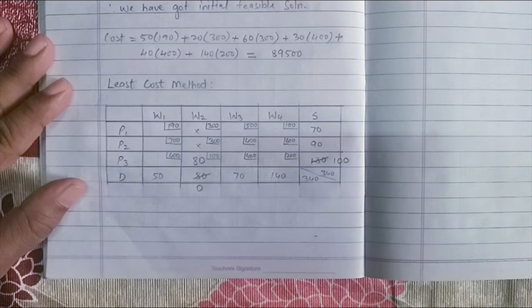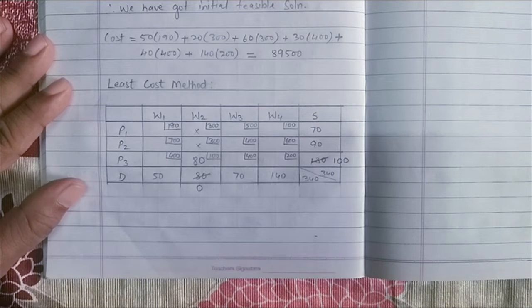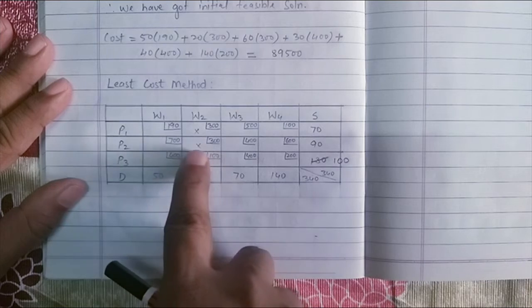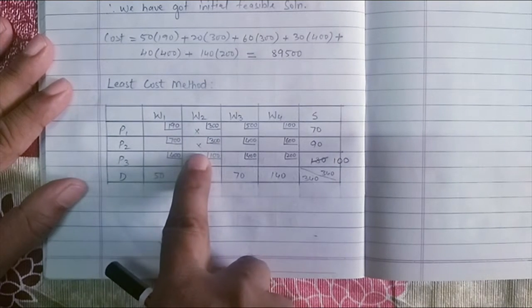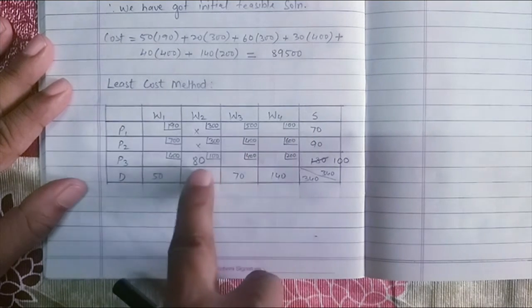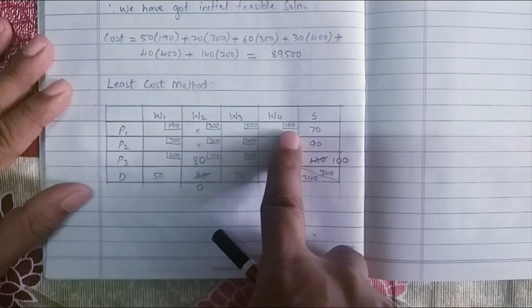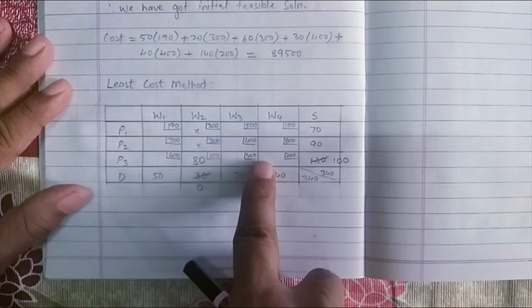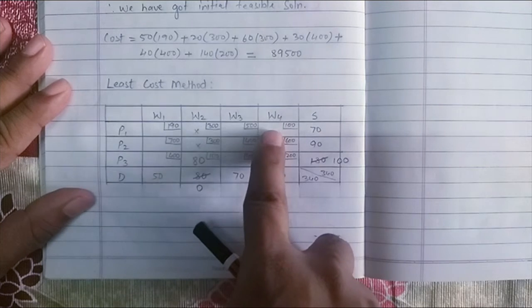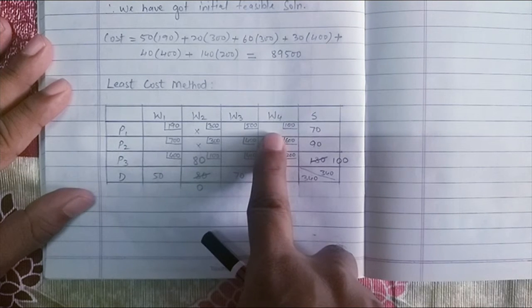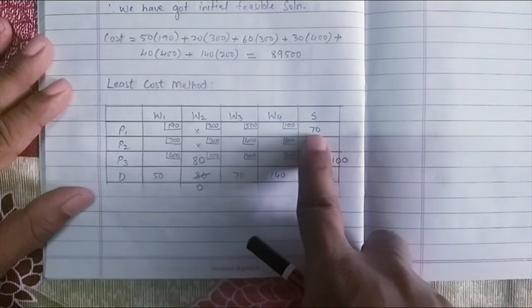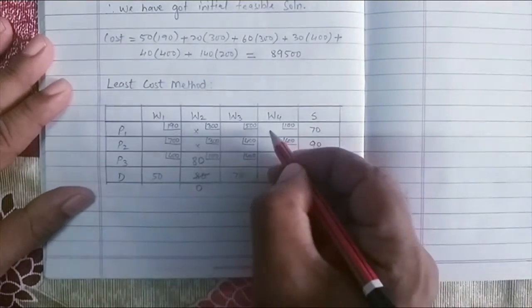Now, search for the next least value among the cells which are not allocated, neither there is a cross in it. Again, we will find that 100 is the least value here. No more 100 in my transportation table. So next allocation will happen in the cell P1, W4. Which is the least value compared to 70 and 140? Of course, 70. So I will assign 70 here.